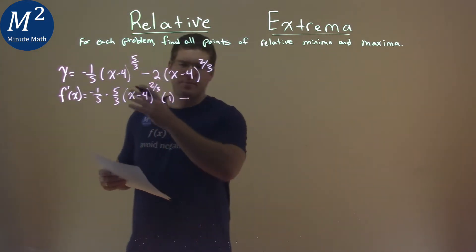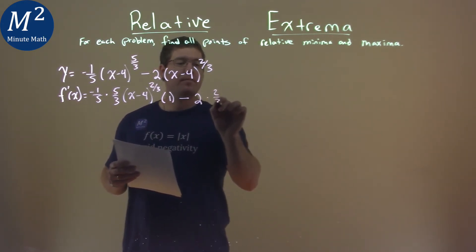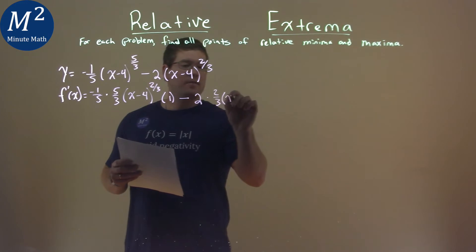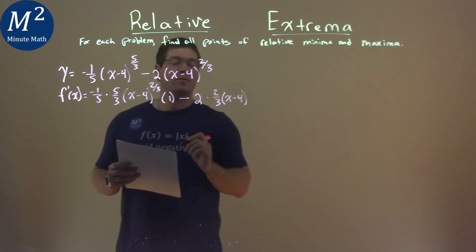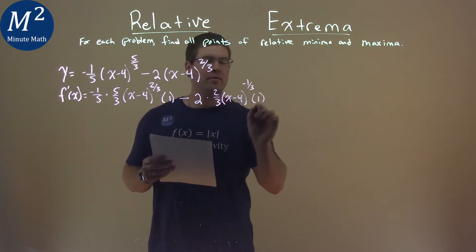Now, I'll use the power rule and chain rule. Two stays out here, bring down the exponent two-thirds. Inside stays the same, x minus four, exponent subtract by one. Two-thirds minus one is negative one-third. The derivative of the inside is just one.